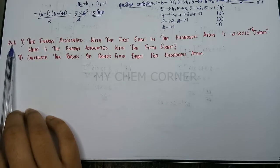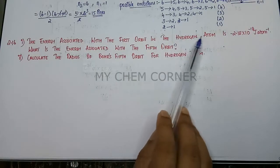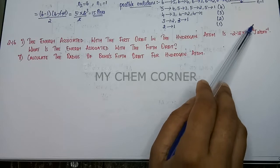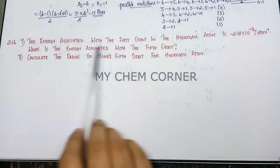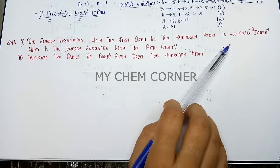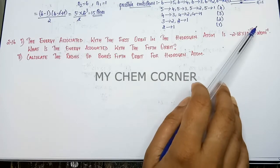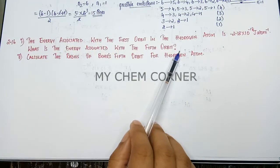Next is question number 2.16. The energy associated with the first orbit in hydrogen atom is minus 2.18 times 10 to the power minus 18 joule per atom. So here, whatever energy is there for that one electron in the hydrogen atom, this much is the energy. What is the energy associated with the fifth orbit?